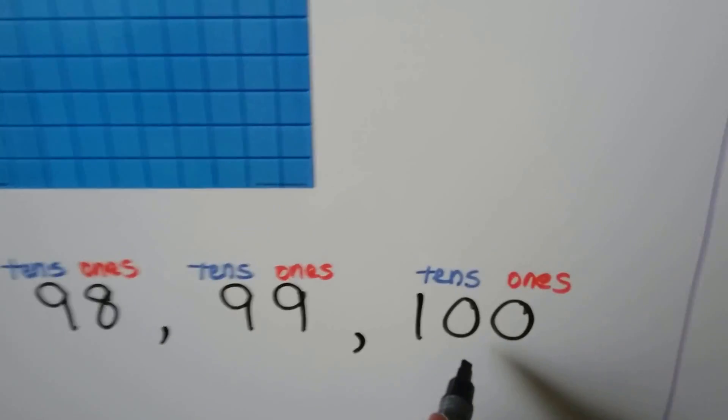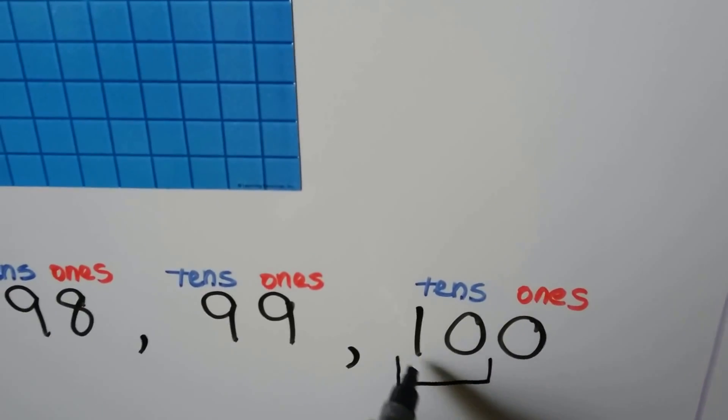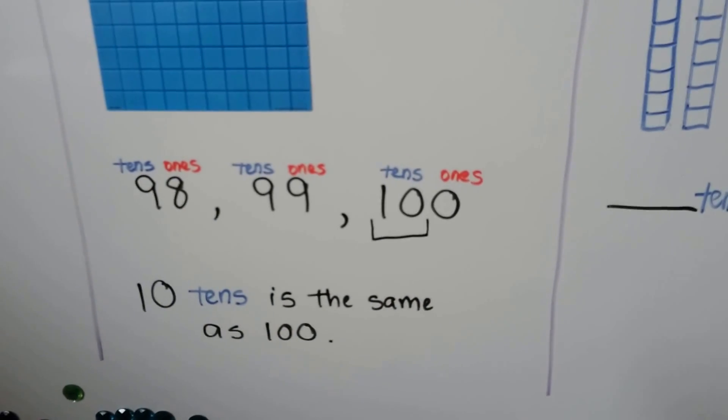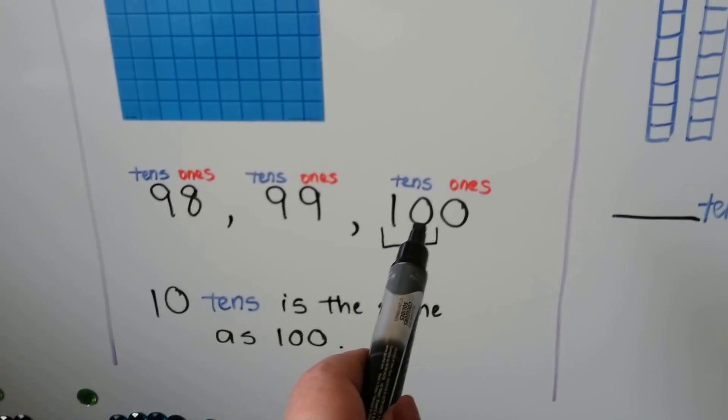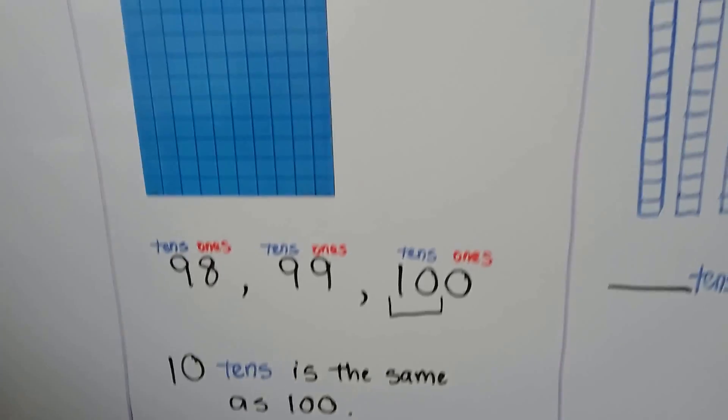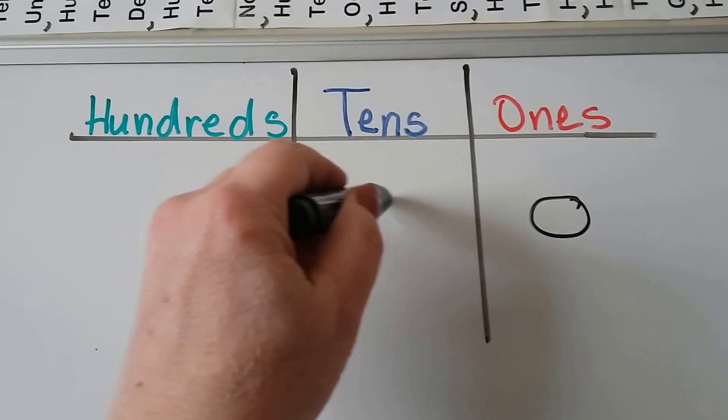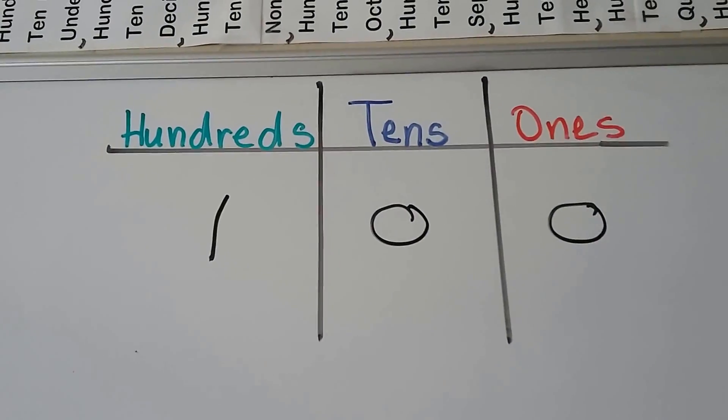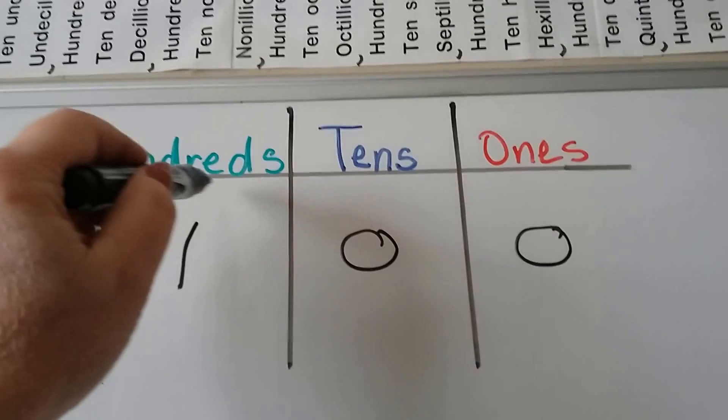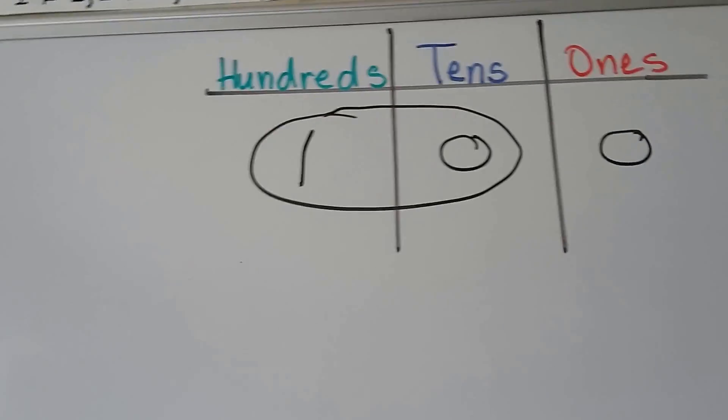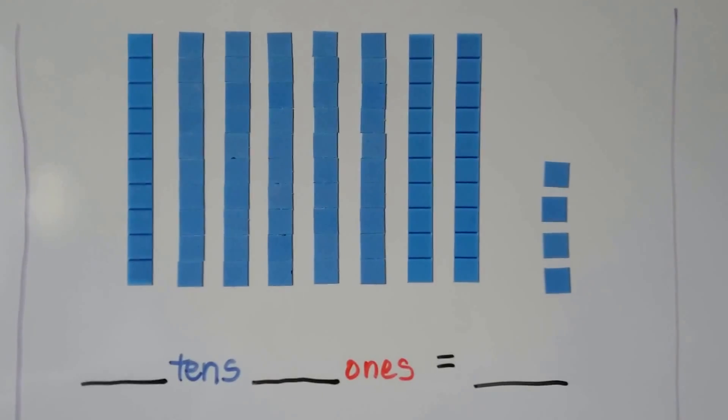See how it looks like we have 10 tens right here? That's actually the same as zero tens and one hundred. Our place values are the ones place, the tens place, and the hundreds place. But we can also look at this as 10 tens. How many tens are here? How many ones are here?